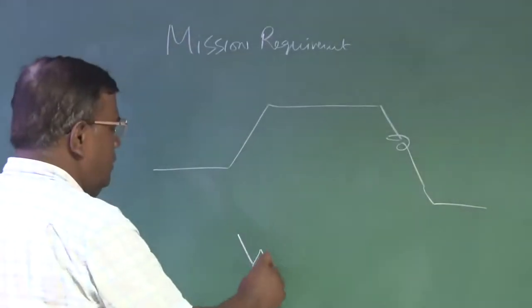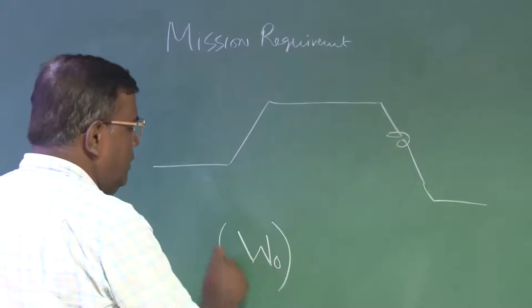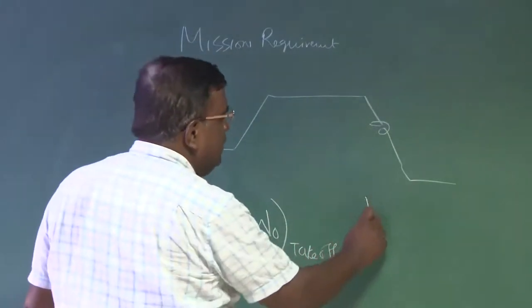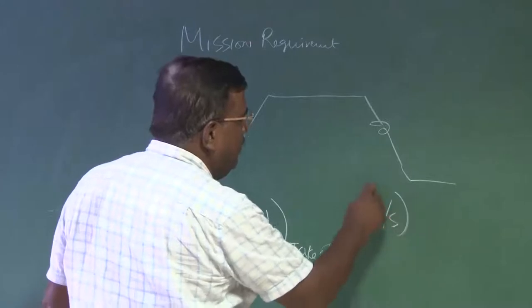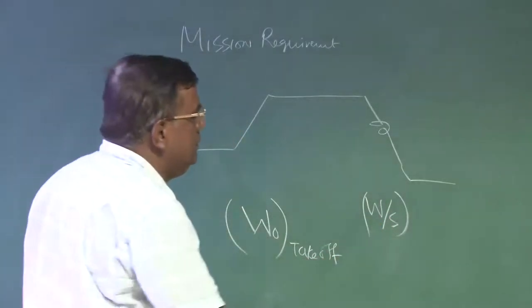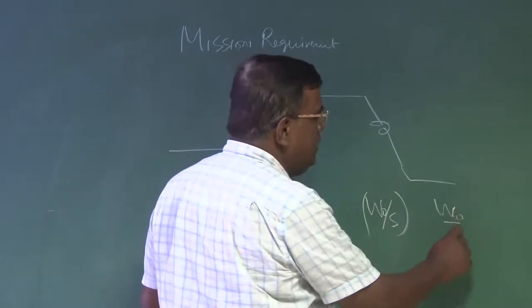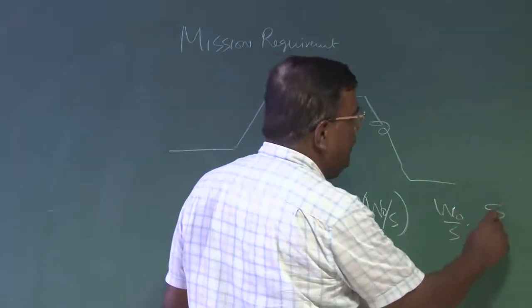We calculated what is the w naught, that is takeoff weight. Then we try to find out wing loading w naught by s. Once we selected w naught by s, we now know what is the wing area.